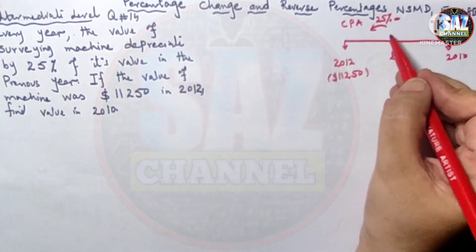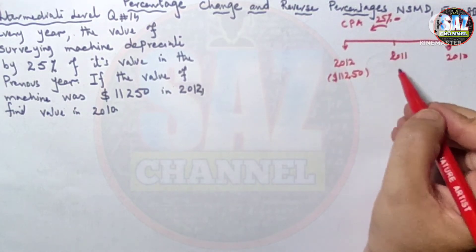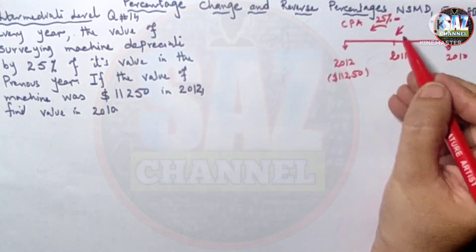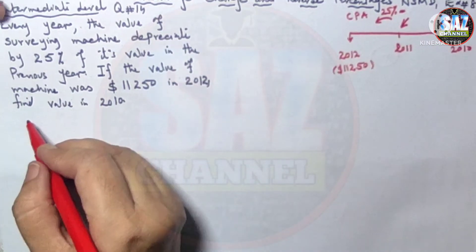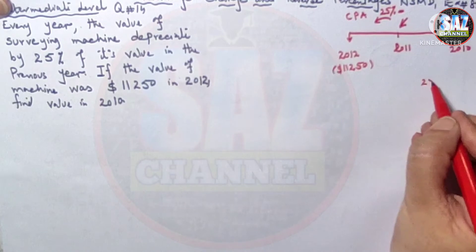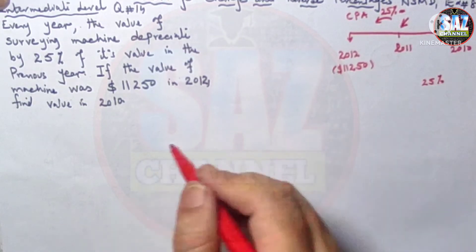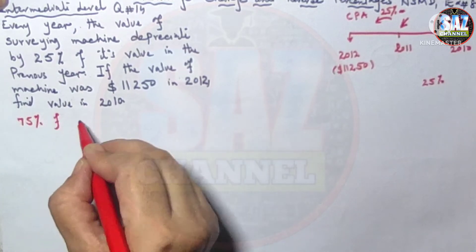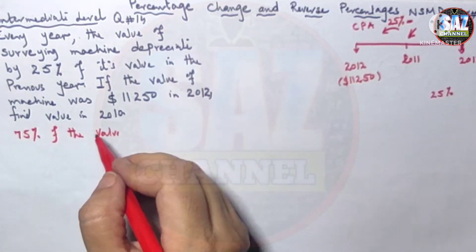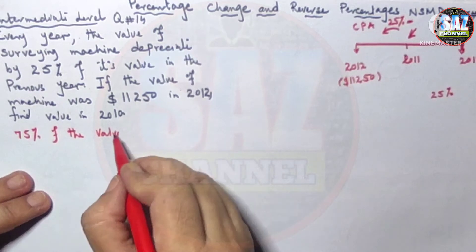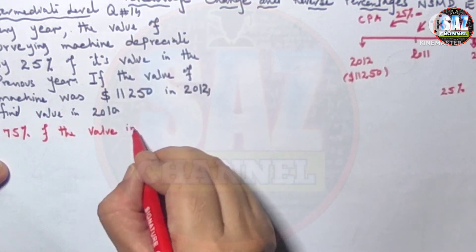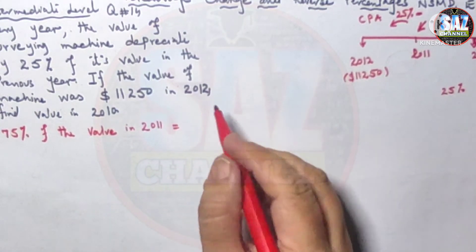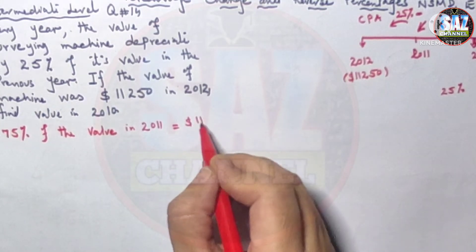The value 11,250 is the decreased value from 2011 to 2012. To find the value in 2010, we first find the value in 2011. Since there is a 25% decrease each year, it means 75% of the value in 2011 equals 11,250.